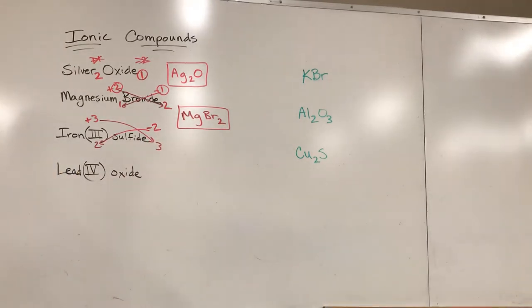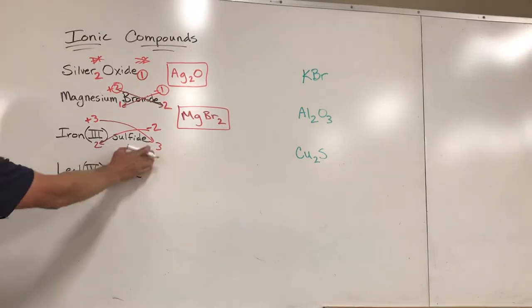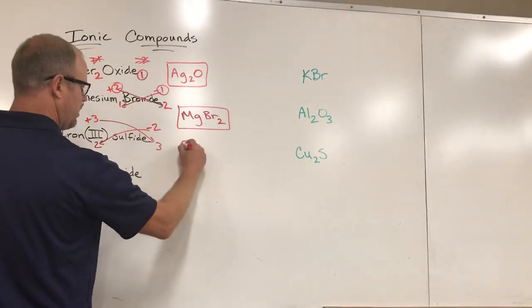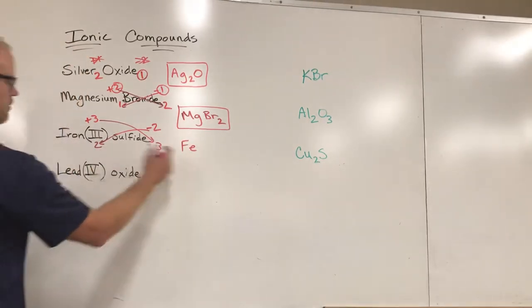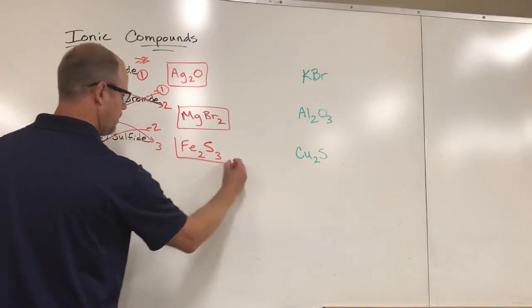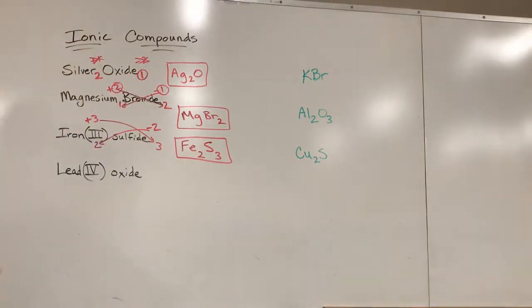In the formula we don't need to write the roman numeral. It doesn't get included in there because these numbers inherently have that relationship involved. So I'm just going to write iron as Fe, there's two of them. Sulfide is S and there's three of them. Now that is iron three sulfide.